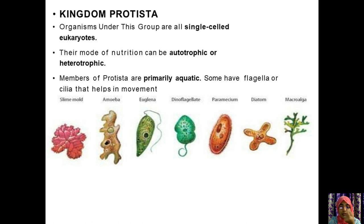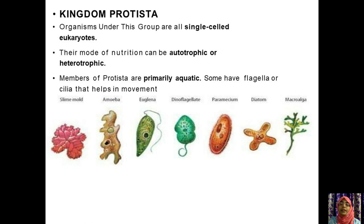Flagella are filament-like structures useful in the movement of the organism. Similar to bacteria, Protista also consists of a eukaryotic cell with a nucleus. It is actually larger than a prokaryotic cell and also has a nucleus.